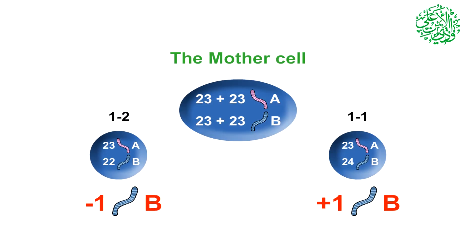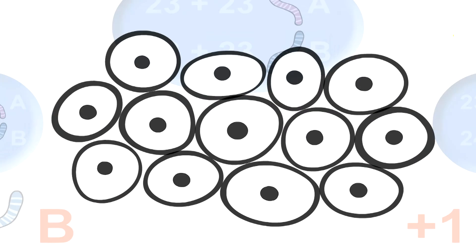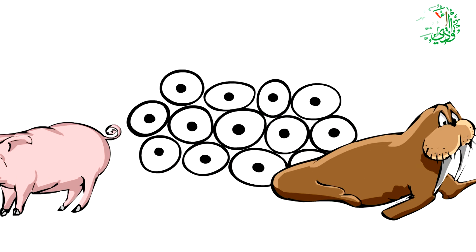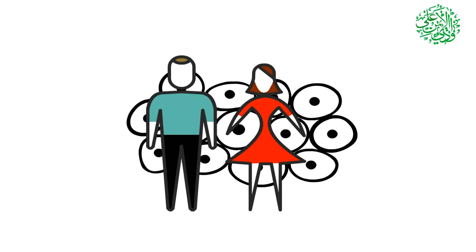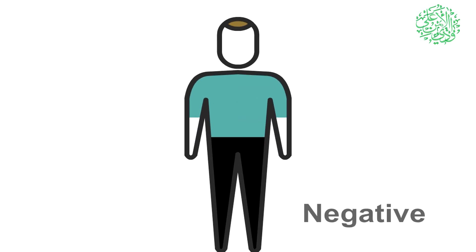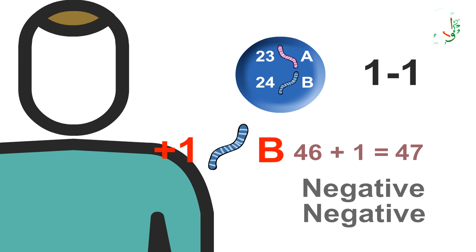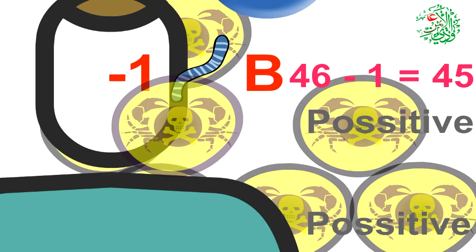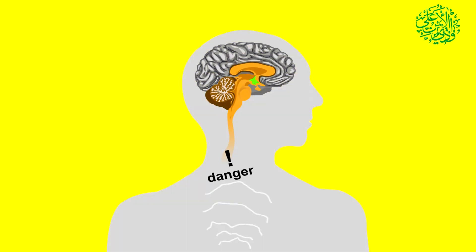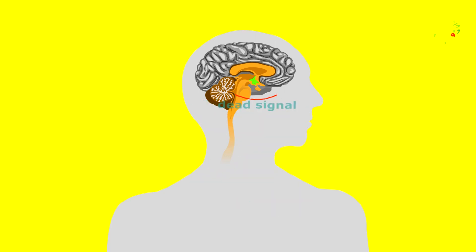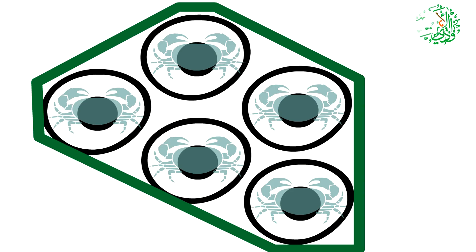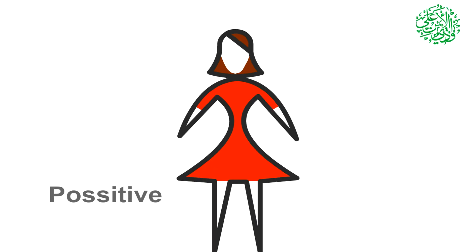The overall charges of living beings cause different functions of the cells. A male's overall charge is negative, so cancerous cell number 1, which has negative charge, causes malignant tumors. Cancerous cell number 2, which has positive charge, commits suicide or is curbed by the defense system, causing benign tumors. A female's overall charge is positive, and the process is vice versa.